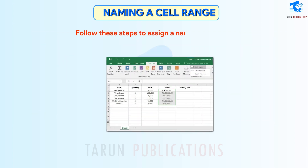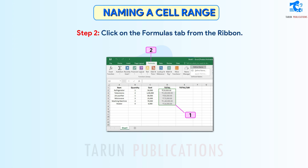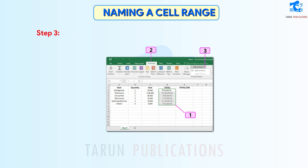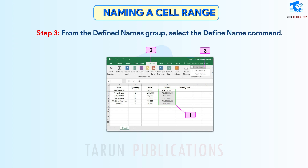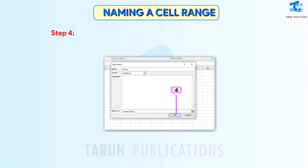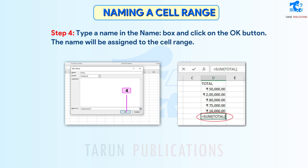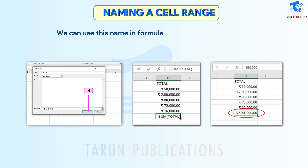Follow these steps to assign a name to a cell range. Step 1: Select a range of cells. Step 2: Click on the Formulas tab from the ribbon. Step 3: From the Define Names group, select the Define Name command. A new Name dialog box will appear. Step 4: Type a name in the Name box and click on the OK button. The name will be assigned to the cell range. Step 5: We can use this name in formulas instead of writing each cell address.